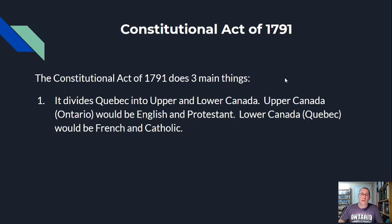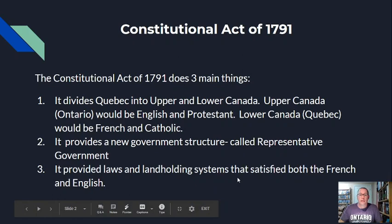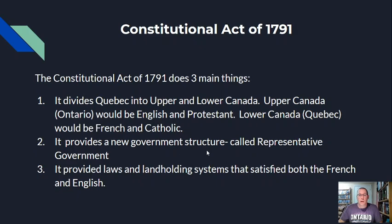I just want to quickly review the work we did earlier — the Constitutional Act of 1791. It does three main things: it divides Quebec into Upper and Lower Canada, provides a new government structure, and provides laws and landholding systems that satisfy both French and English. Last class we talked about this government structure and how there is going to be a governor for Upper Canada and Lower Canada.